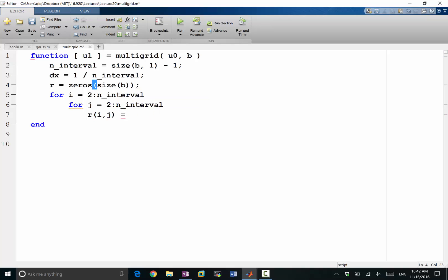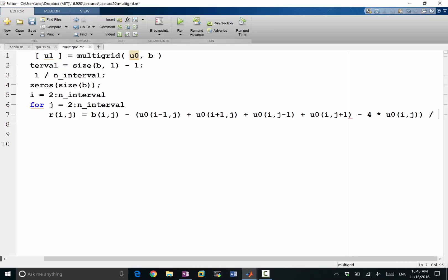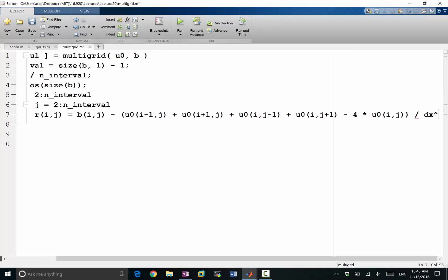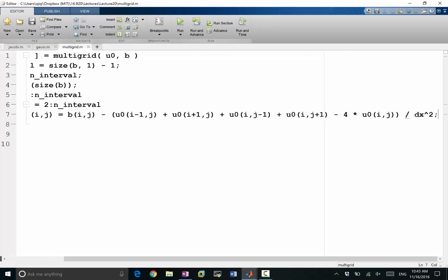Let's make it clearer, let's do zeros size of B. So R(i,j) would be equal to the right-hand side which is B(i,j) minus the Poisson's equation, which is U0(i-1,j) + U0(i+1,j) + U0(i,j-1) + U0(i,j+1) - 4*U0(i,j) divided by dx squared.